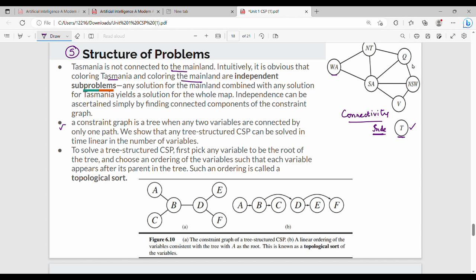Next, a constraint graph is a tree when any two variables are connected by only one path. Here is an example - A to B. It is a tree, so we say two variables are connected to a single path. A tree can be solved in linear time, so overall time is linear time, not exponential time.